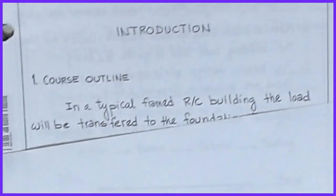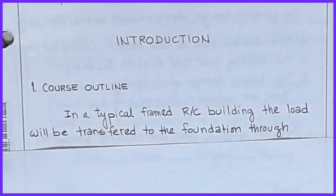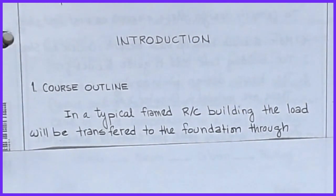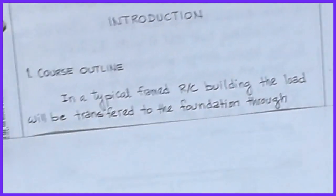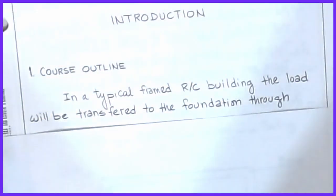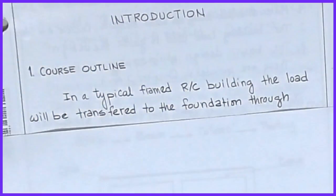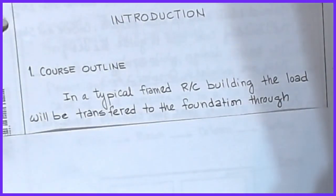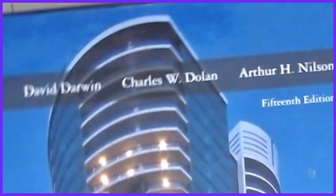Hi, welcome to the first class for our Design of Concrete Structures course. In this lesson, we're going to talk about the flow of the lessons coming through this course, and then we'll get into a little bit of history and the arrangement of topics we'll be dealing with. The textbook that this course will be referencing is Design of Concrete Structures by Darwin, Dolan, and Nielsen, the 15th edition.